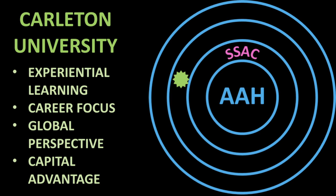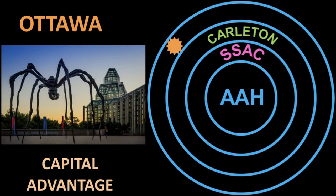The School for Studies in Art and Culture is situated within Carleton University, which adds another layer of assets: university-level emphases like experiential learning, our focus on career development, the global perspective the university has, and the capital advantage. The outermost circle is the city of Ottawa, which as you know is the Canadian capital. Although Ottawa is a good-sized city, being in the capital means we have cultural resources at our disposal that are more extensive than you'd expect for a city our size - things like the National Gallery, pictured here, as well as a variety of other galleries and cultural institutions.